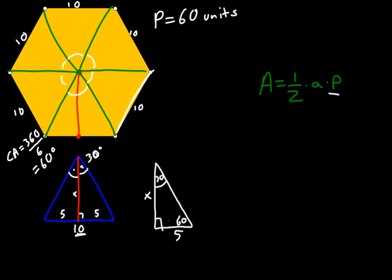And remember, the short leg is n, 2n, and n root 3. So that apothem length, that apothem, is going to be 5 root 3.